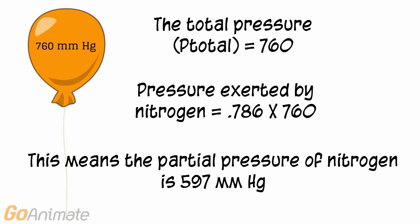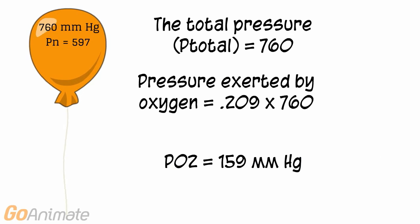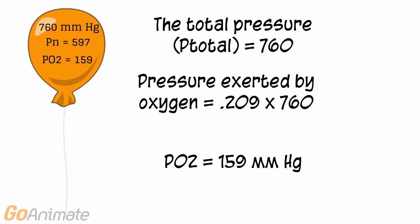If air is about 79% nitrogen, then the pressure exerted by nitrogen in the balloon is 0.786 times 760, which comes out to 597 mmHg. In other words, the PN2, or partial pressure of nitrogen, is 597 mmHg. Likewise, if air is about 21% oxygen, then the partial pressure of oxygen is 0.209 times 760, or 159 mmHg. We say that the partial pressure of oxygen, or PO2, is 159 mmHg.